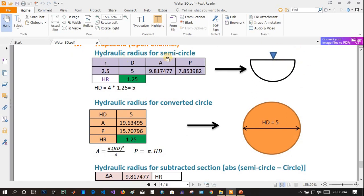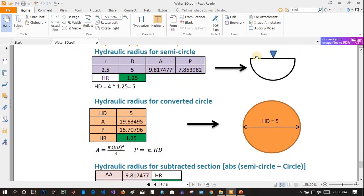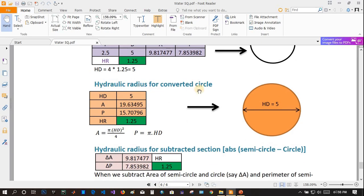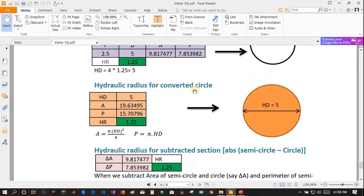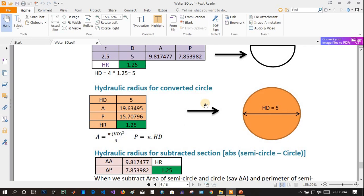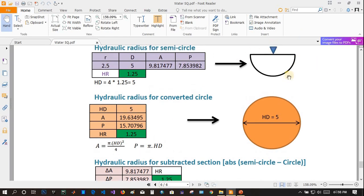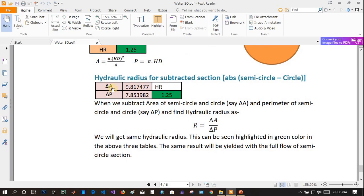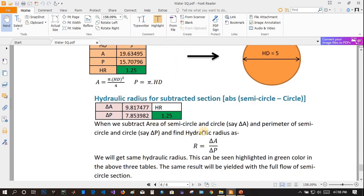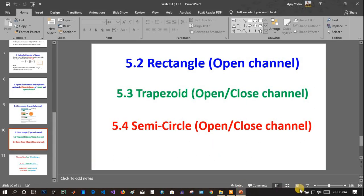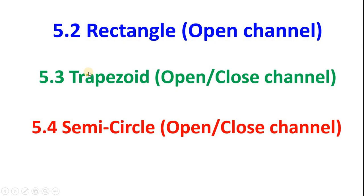For a semicircle, if the radius is 2.5 then the diameter is 5. Find the area of the semicircle and its perimeter, then find hydraulic radius. For the converted full circle, you get the same hydraulic radius because area is exactly half and perimeter is exactly half, so R remains the same. The differentiated section also gives the same value. We have now seen three open and closed channel examples — you can try these yourself.